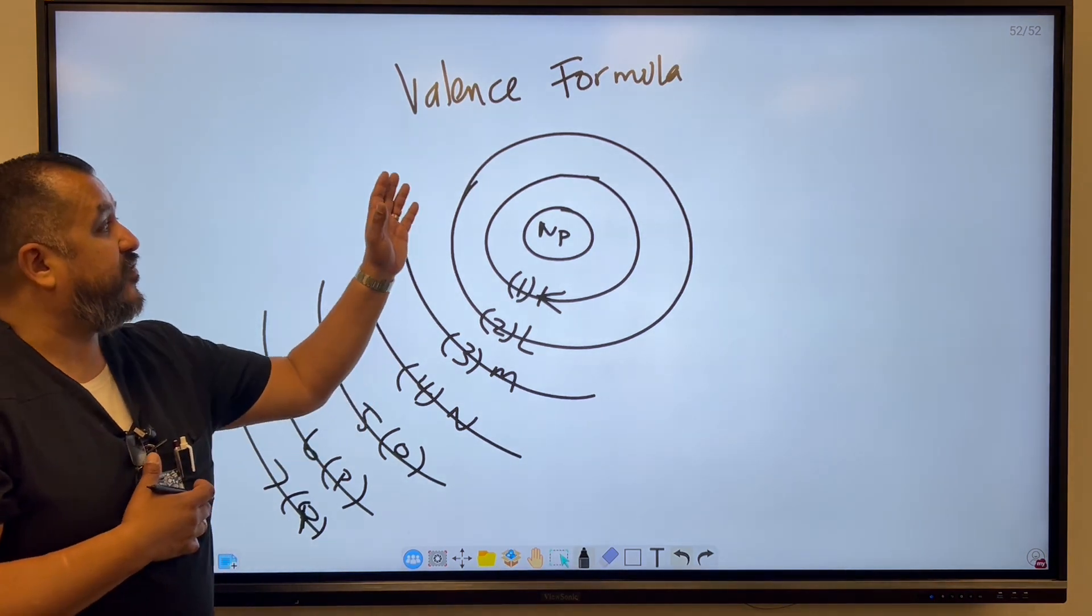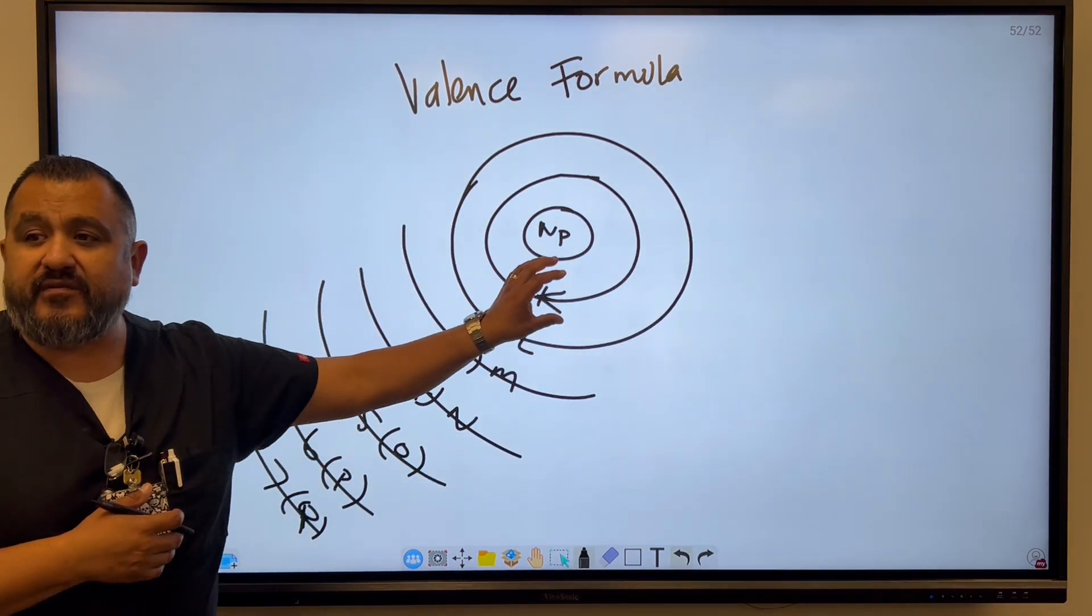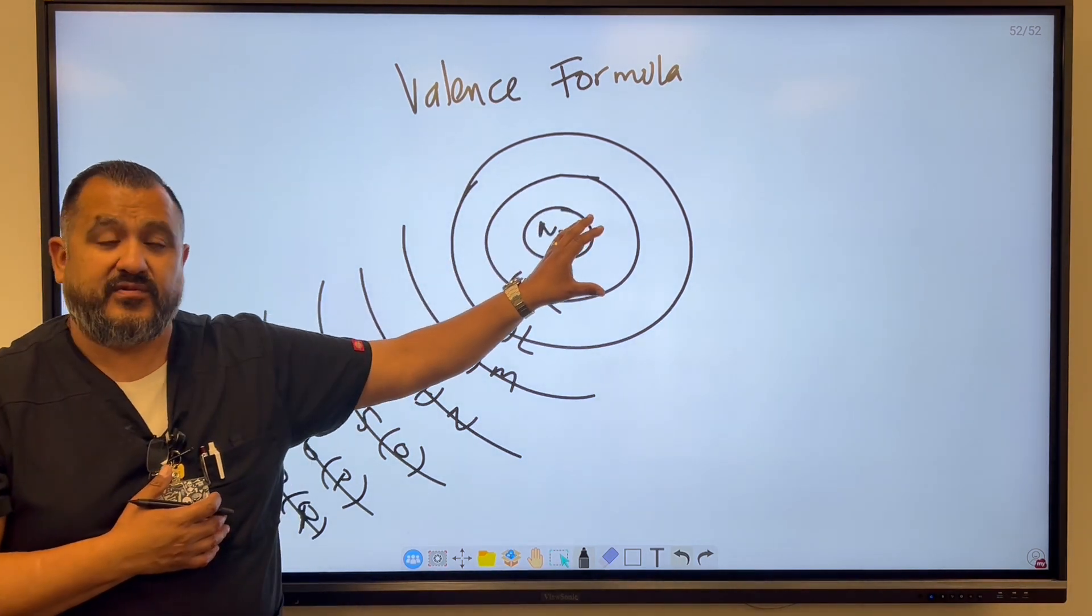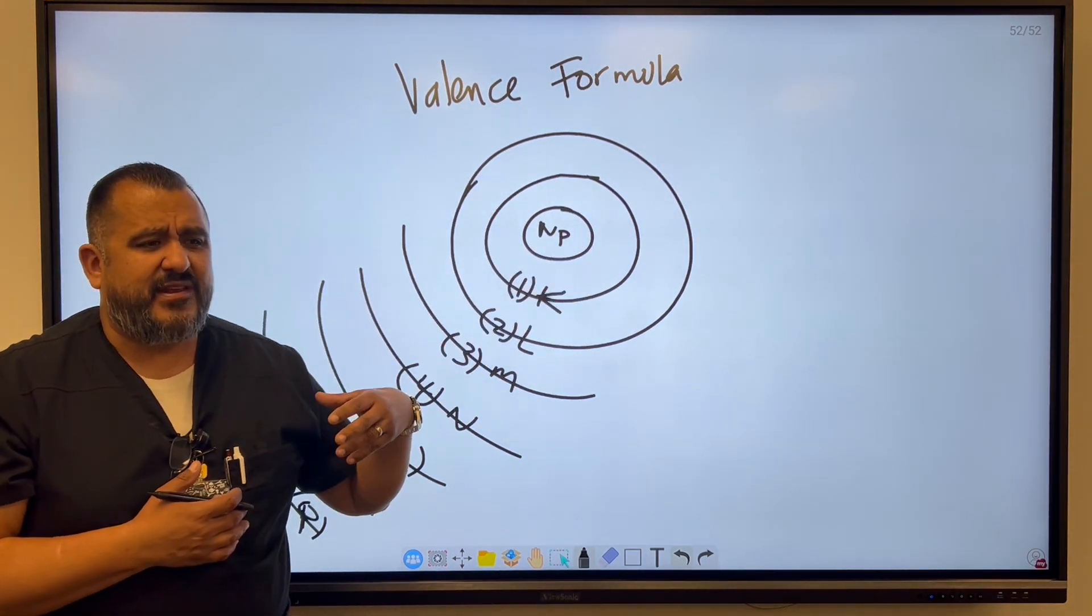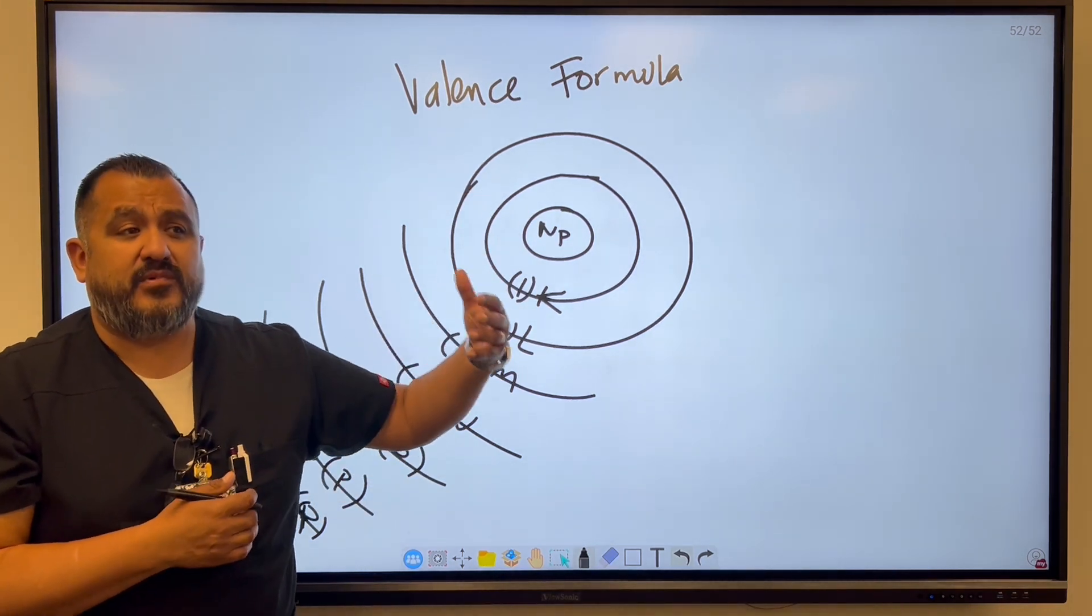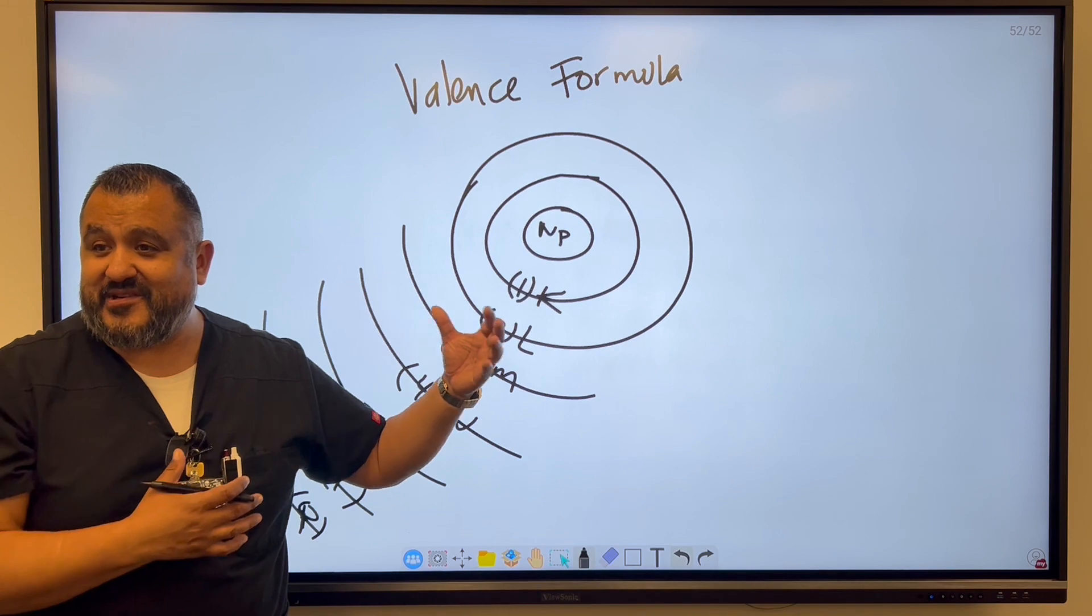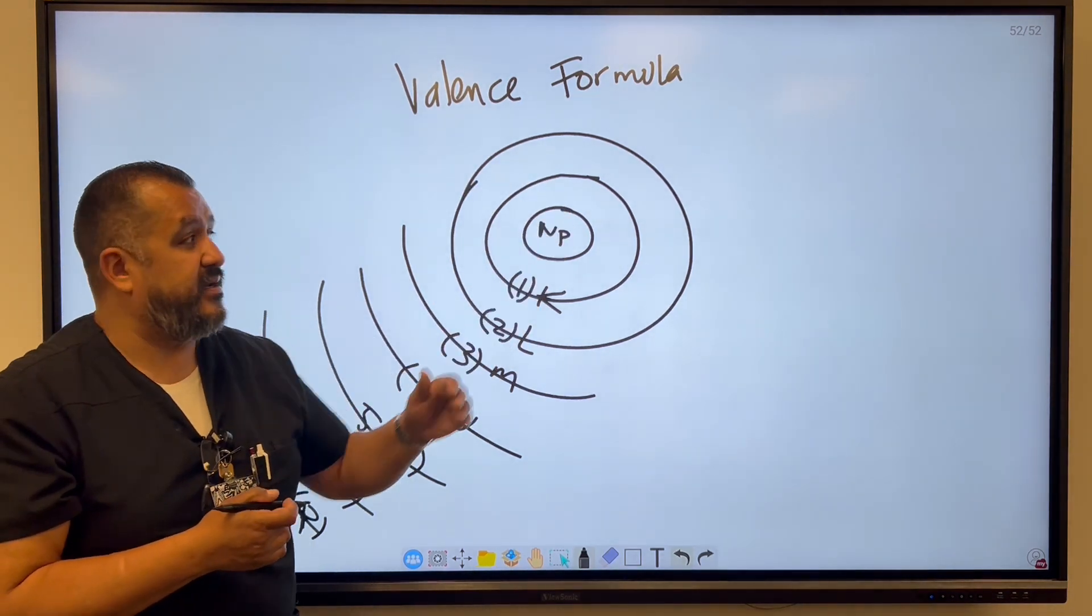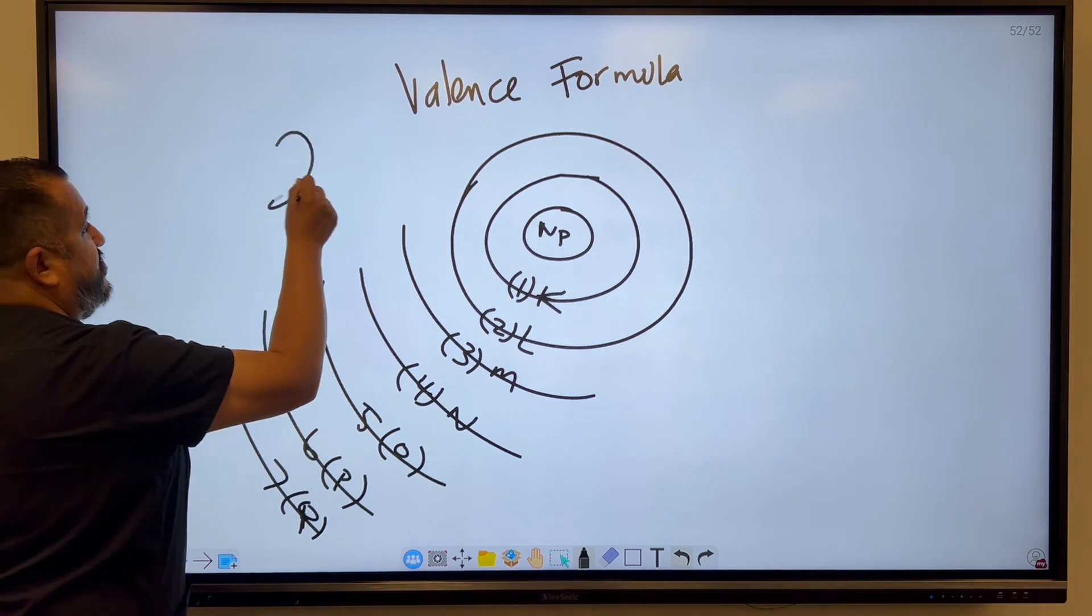So the valence formula says that there's a certain amount of electrons that can be held on that energy level. Instead of having to memorize all the maximum occupancy electrons that can be held, we can go ahead and know a formula called the valence formula. And the formula is 2N squared.